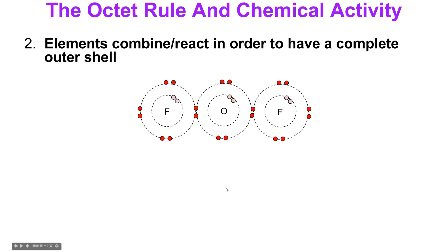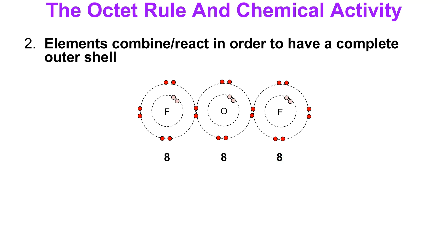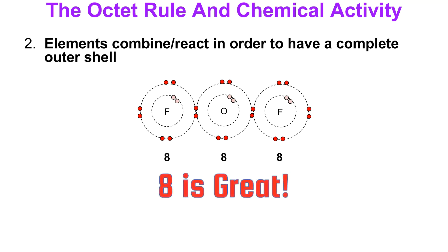What's happening is they're actually sharing some of their valence electrons. When they do that, watch what happens with their outer energy levels: fluorine now has eight, oxygen now has eight, and fluorine now has eight. All of them have a complete outer energy level. As this compound forms, they're unreactive — because eight is great.